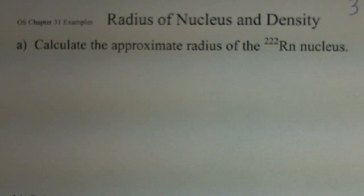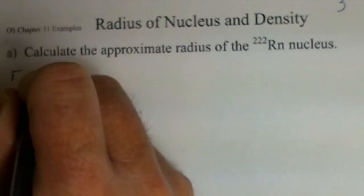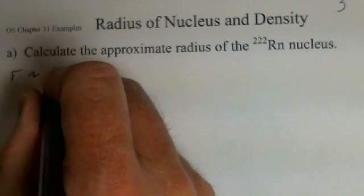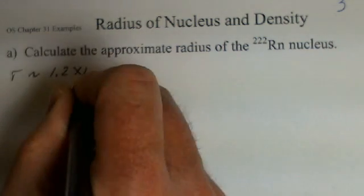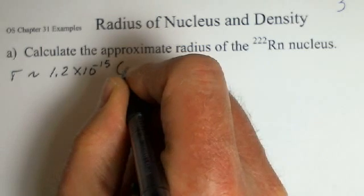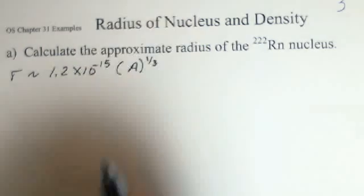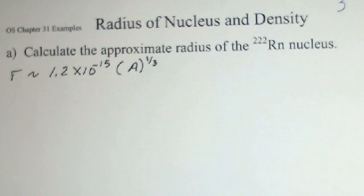we'll use the knowledge gained by scattering experiments that tells us if we assume the nucleus is a sphere, and it's probably not too far off, the radius is about 1.2 times 10 to the minus 15. And then we multiply by the atomic number to the one-third power, the atomic mass number,